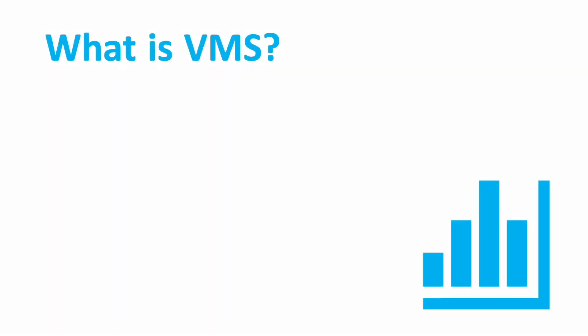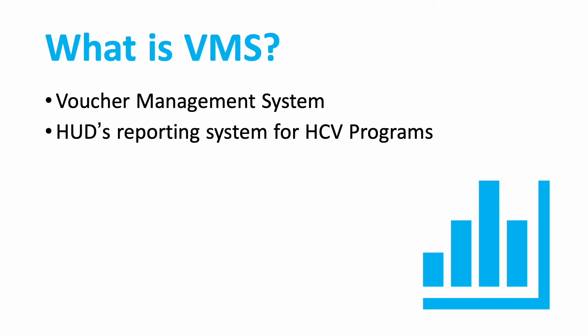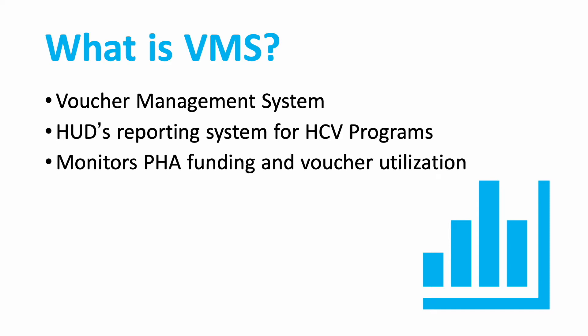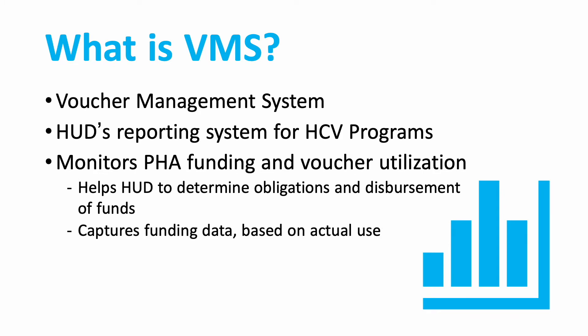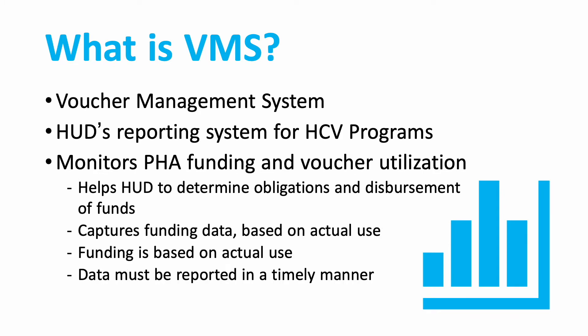What is the Voucher Management System, or VMS? VMS is the Reporting and Information Management System used by the United States Department of Housing and Urban Development, commonly known as HUD, for its Housing Choice Voucher Programs. VMS is used to monitor and to manage individual public housing authorities' funding and use of vouchers in their HCV program.